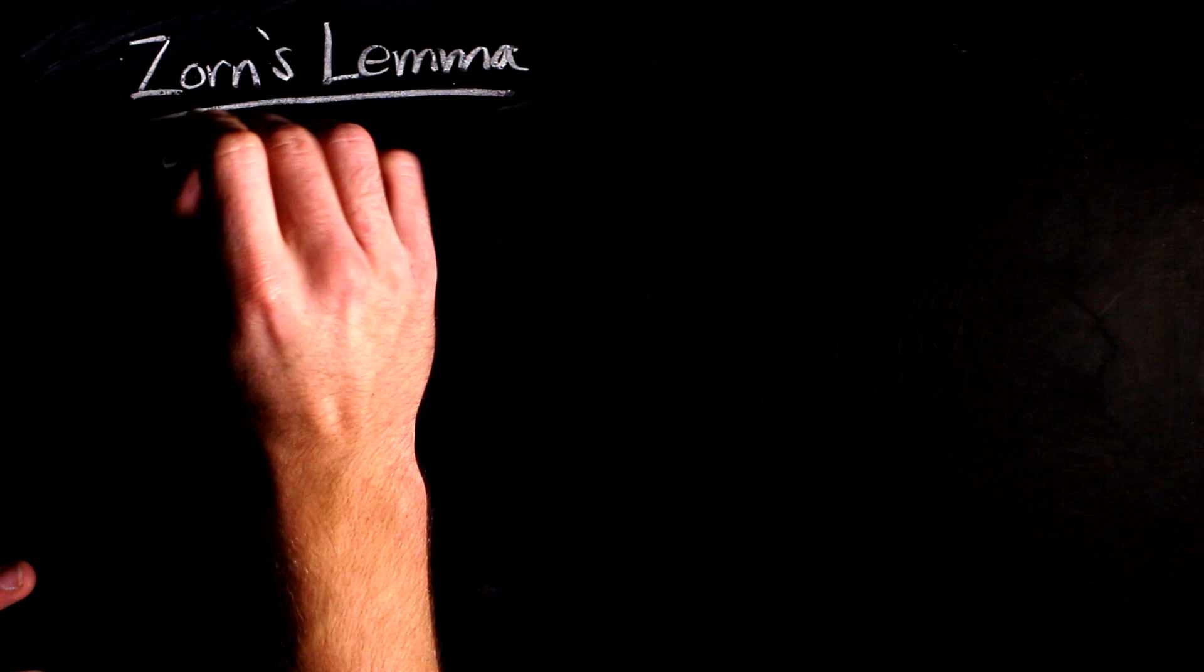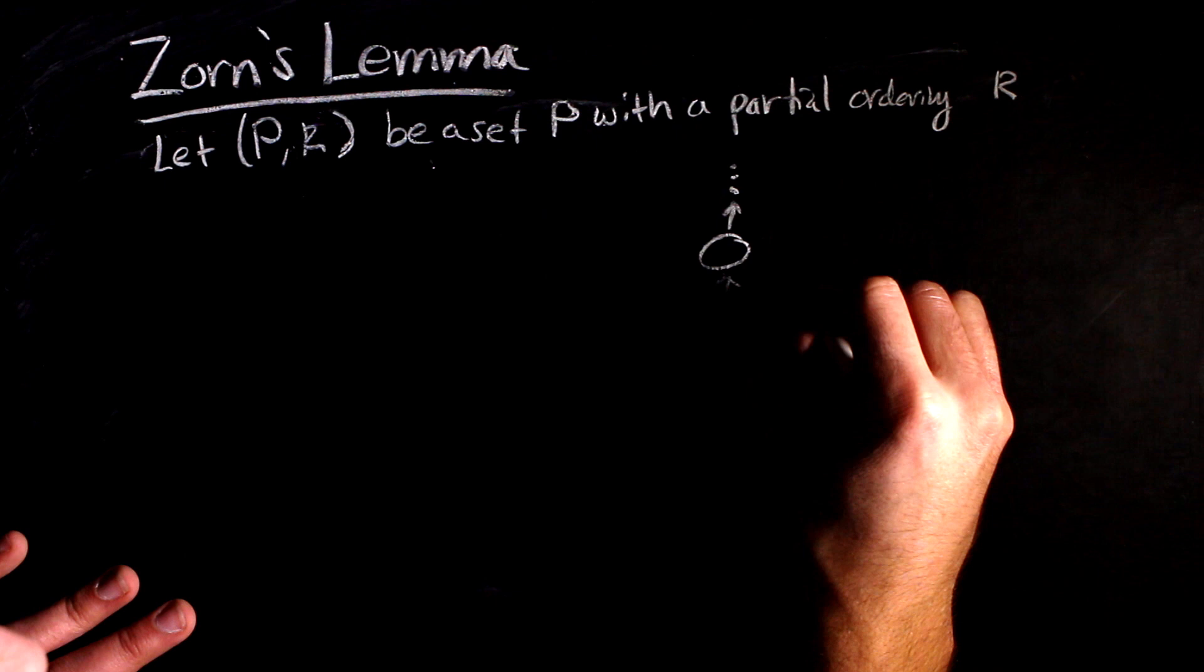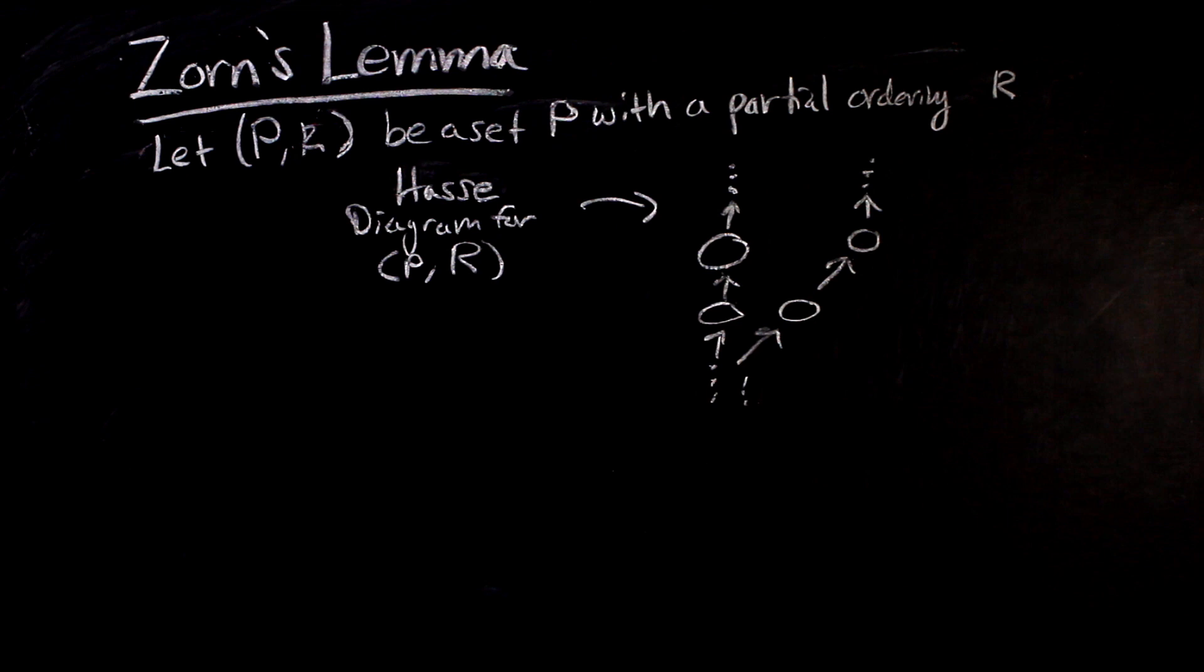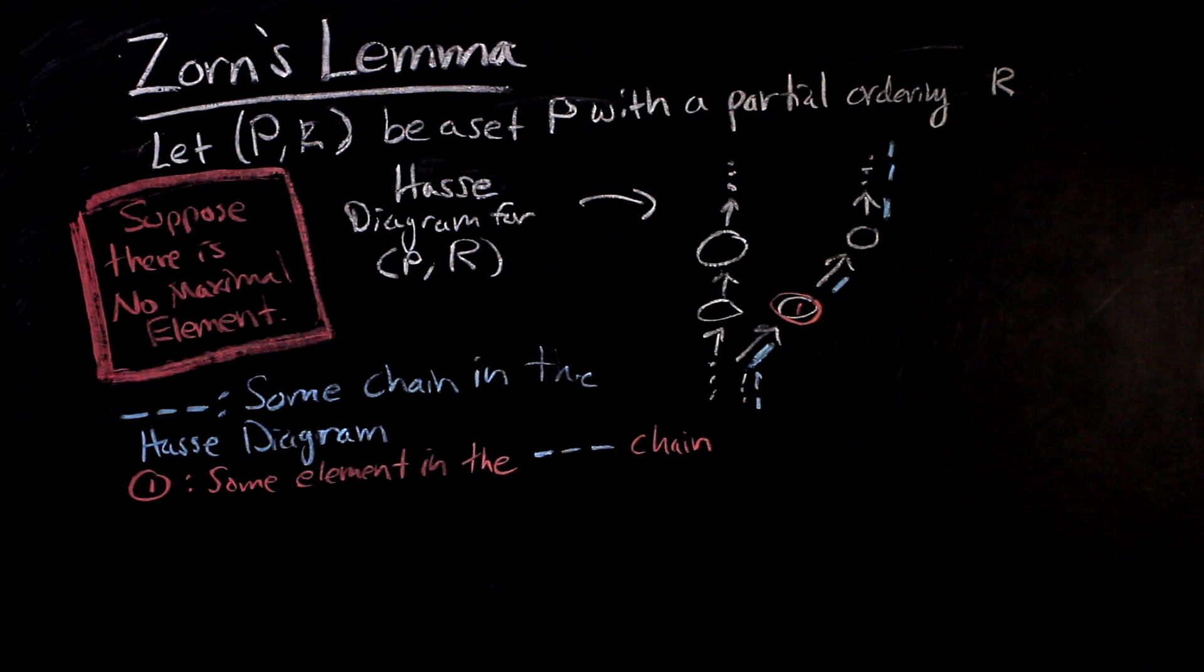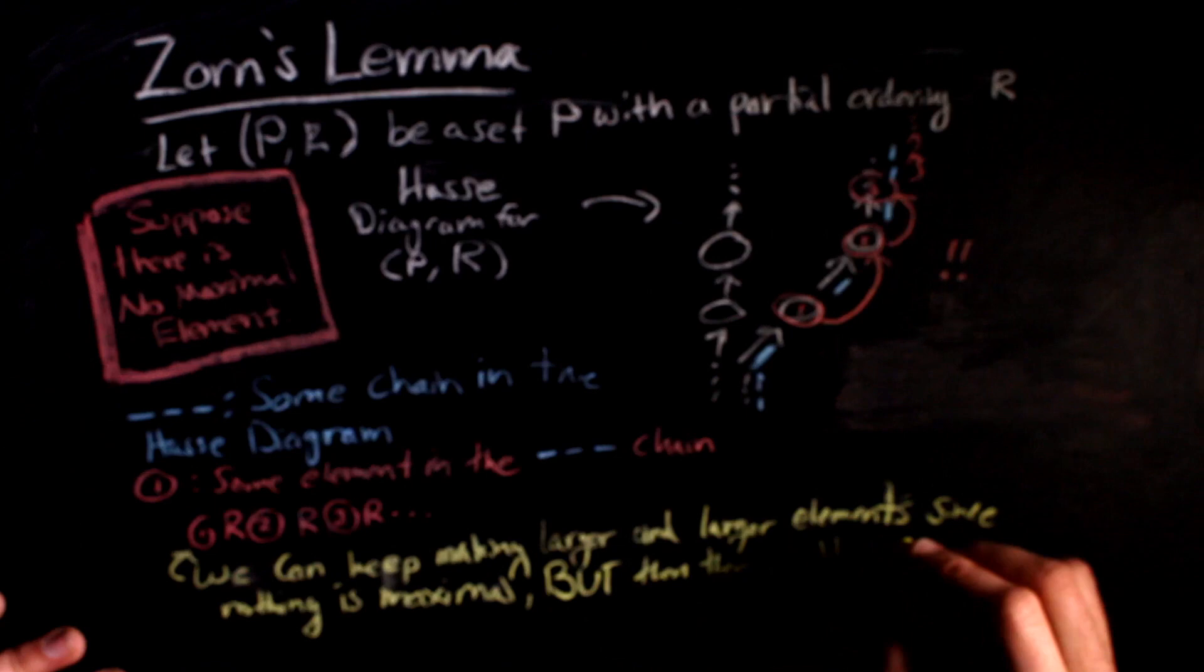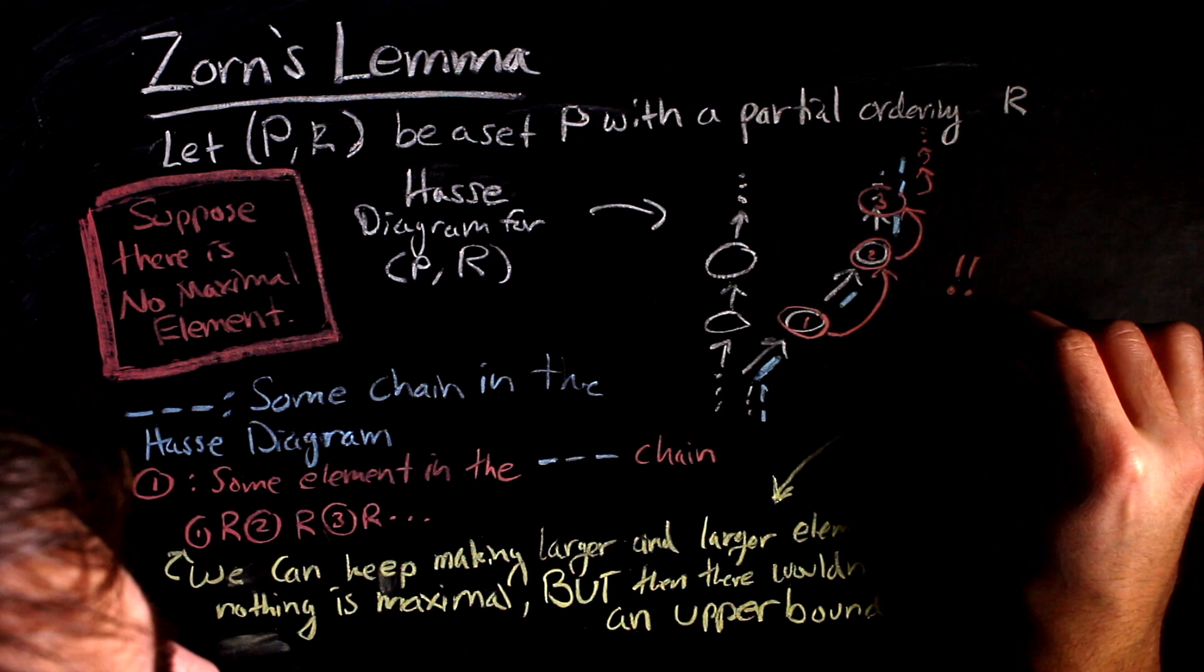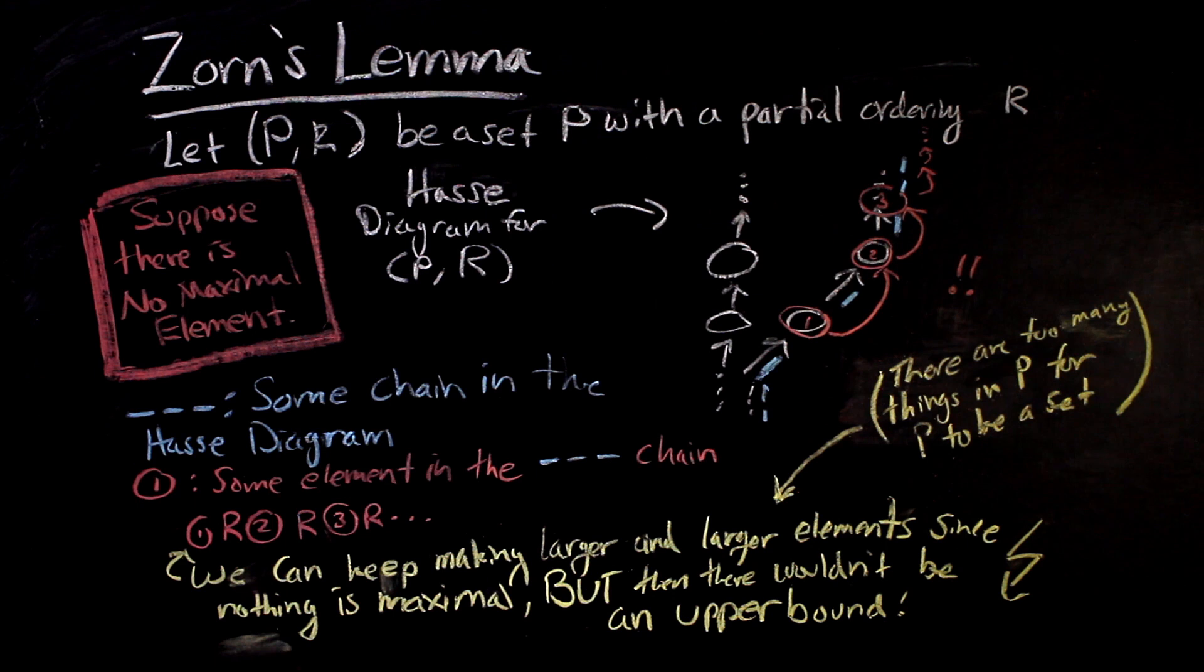These two facts about ordinals allow us to show Zorn's lemma by contradiction, using Hasse diagrams. Suppose that P is a partially ordered set such that each chain has an upper bound, and suppose that there is no maximal element. For each chain, we can find an element, and then choose an element that is bigger, because there is no maximal element. However, this is where we encounter a problem. We should be able to go on finding bigger and bigger elements forever. And these elements are ordered, so the same number of them as there are ordinals. In other words, since there are more ordinals than there are elements of a set, our set P cannot possibly be a set. It's just too big. And that's a contradiction.